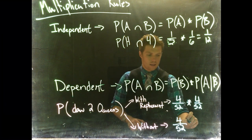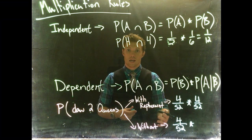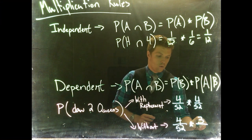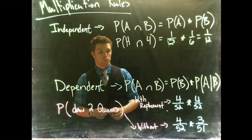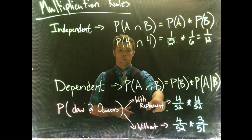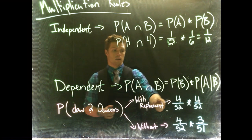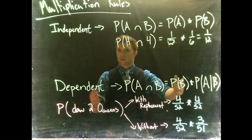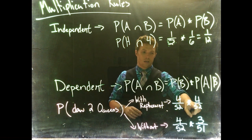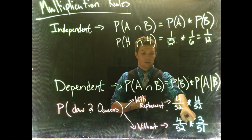If we already drew a queen, our sample space and event space both change. We'd only have three queens left in the deck and one fewer card total, so the probability becomes three divided by 51. That's our multiplication rule in action: with replacement is an independent event — four divided by 52 times four divided by 52 — and without replacement, knowing the first card was a queen affects the next probability.